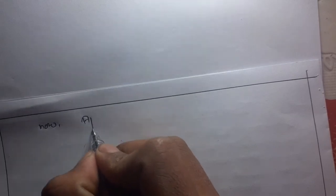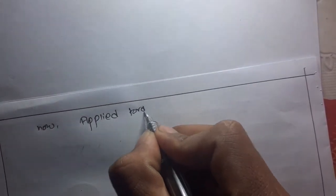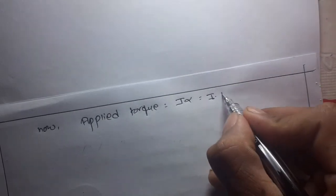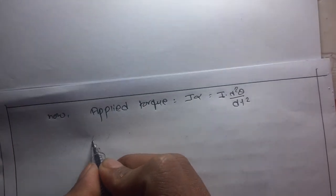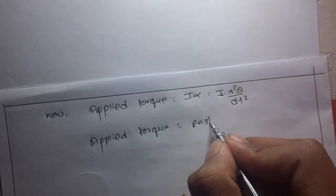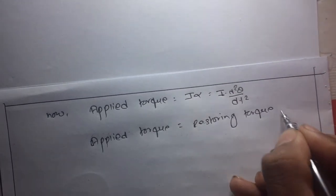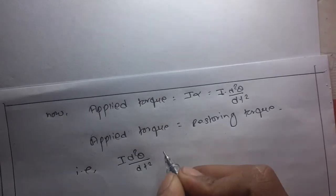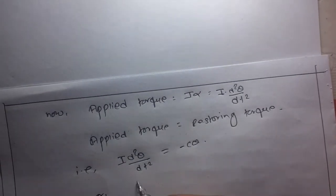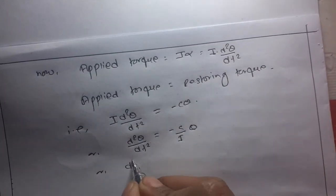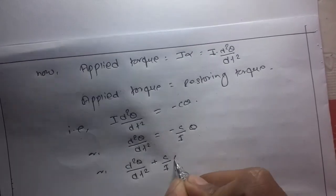Applied torque equals I·alpha, where I is the moment of inertia and alpha is the angular acceleration, that is I·(d²θ/dt²). If no external agencies apply, then applied torque equals restoring torque: I·(d²θ/dt²) = −C·θ, or d²θ/dt² = −(C/I)·θ, giving d²θ/dt² + (C/I)·θ = 0.